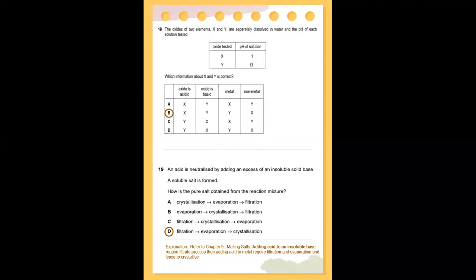Number 18: the oxides of two elements X and Y are separately dissolved in water and the pH of each solution is tested. X produces pH 1 and Y produces pH 13. Which information about X and Y is correct? The answer is B. Number 19: an acid is neutralized by adding an excess of an insoluble solid base. Refer to chapter 9, making salts. Adding acid to an insoluble base requires filtration; adding acid to a metal requires filtration, evaporation, and crystallization. So, the answer is D — three processes.